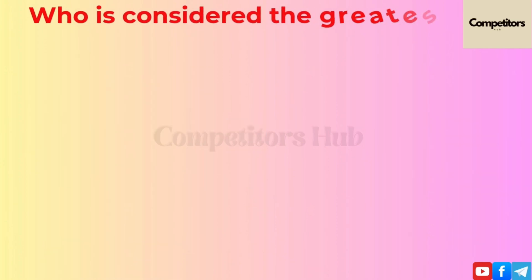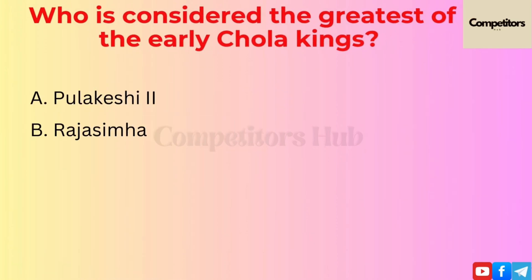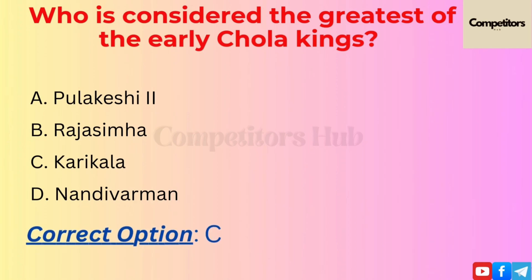The next question is: who is considered the greatest of the early Chola kings? Option A: Pulakesi II. Option B: Rajasimha. Option C: Karikala. Option D: Nandivarman. The correct option is C, Karikala.